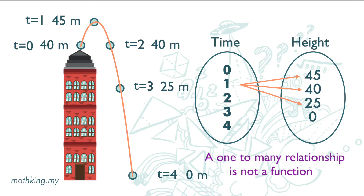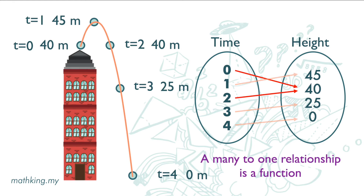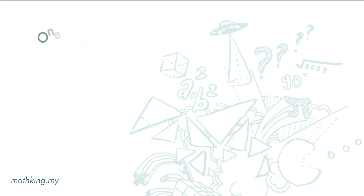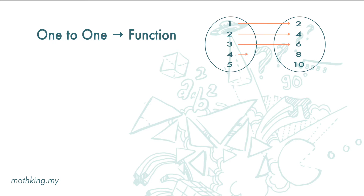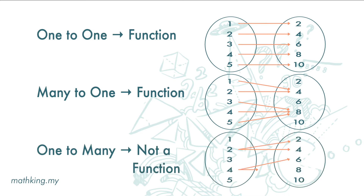However, it is possible to have a many-to-one relationship in a function. As a summary: a one-to-one relationship is a function, a many-to-one relationship is a function, but a one-to-many relationship is not a function.